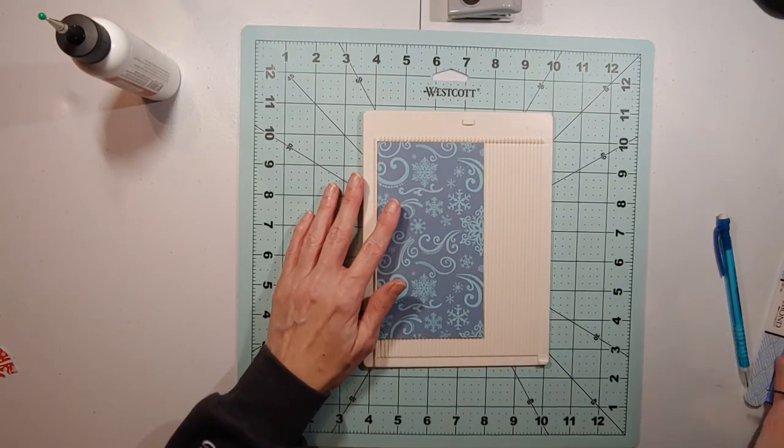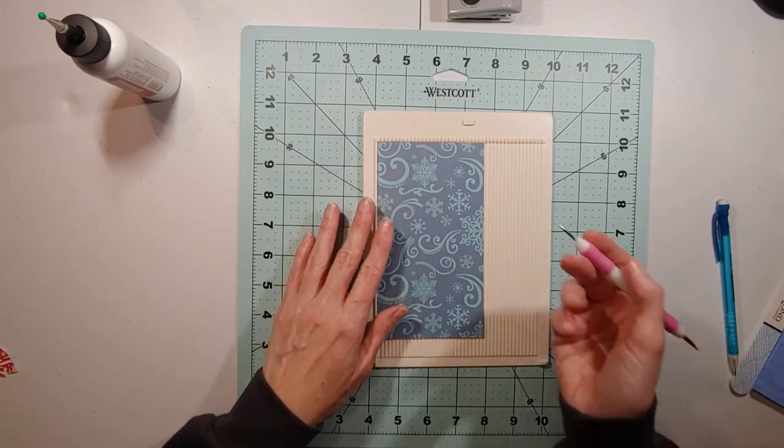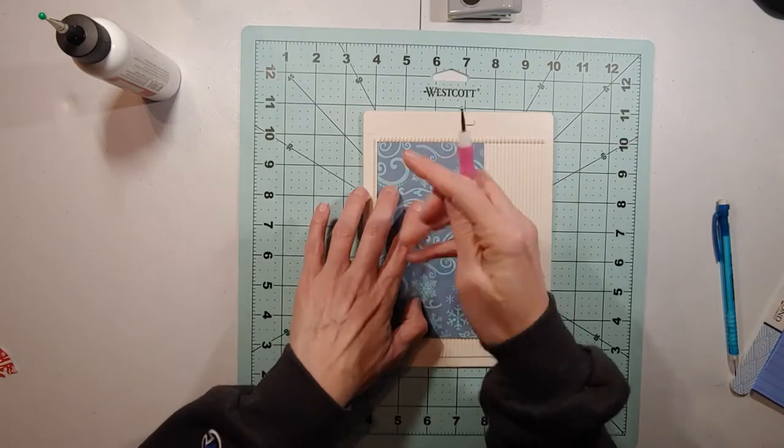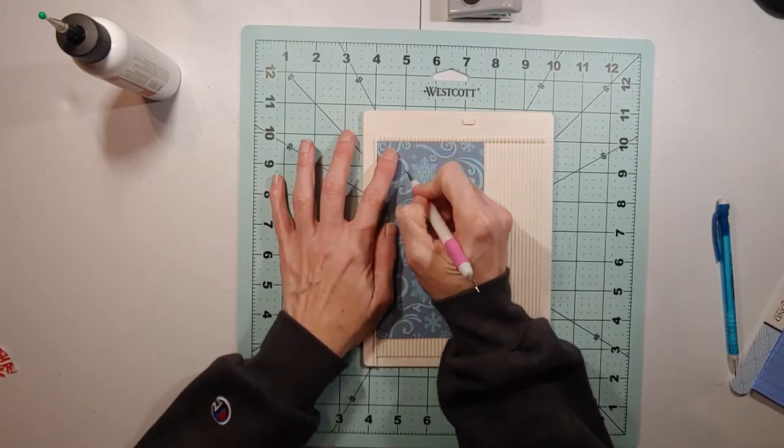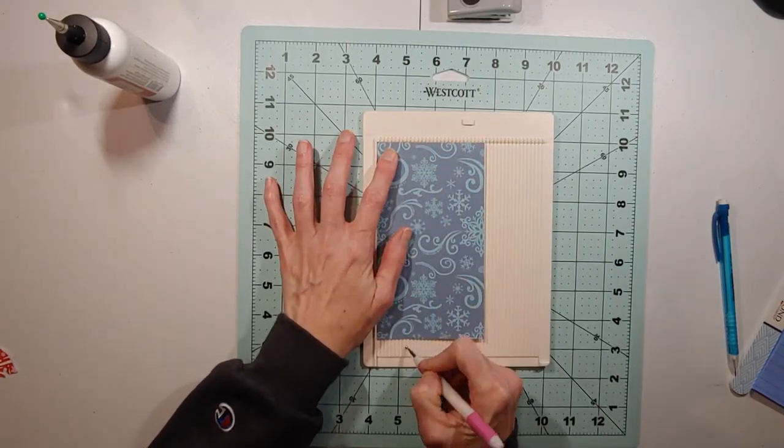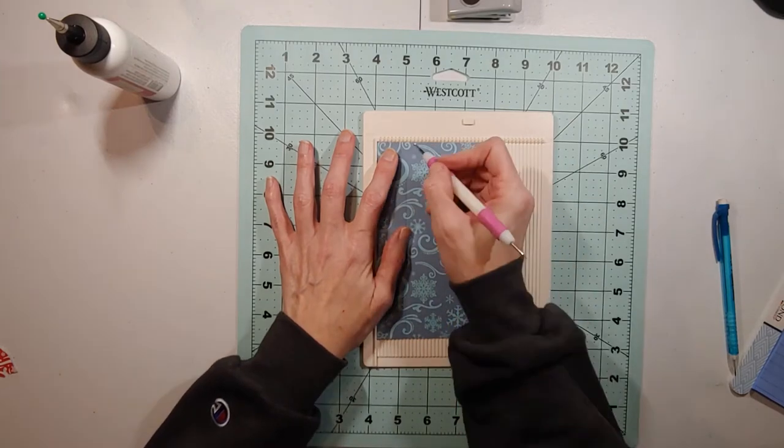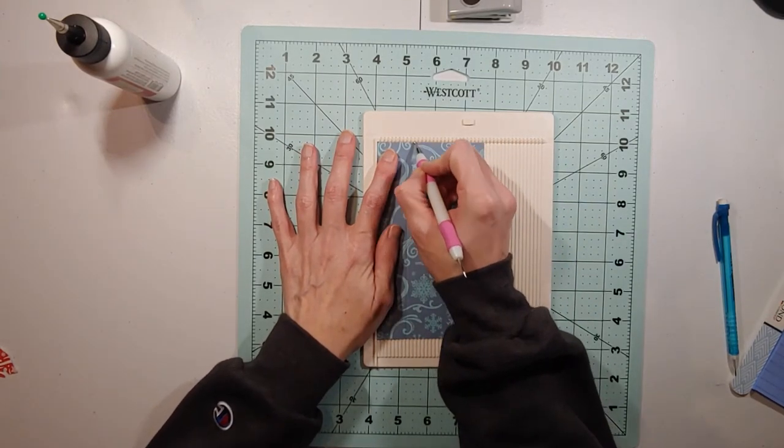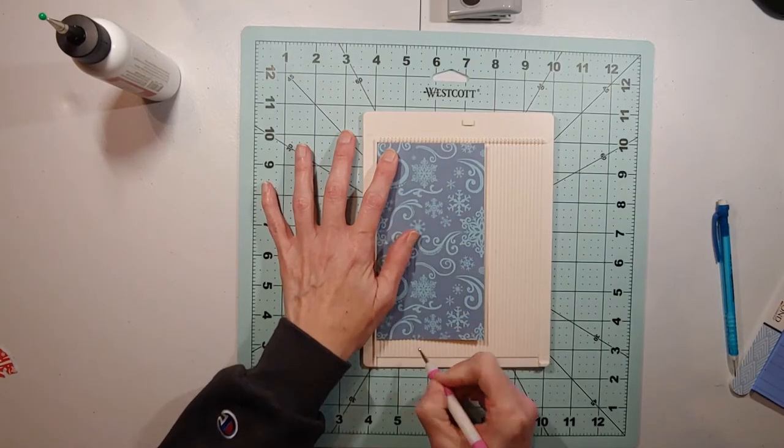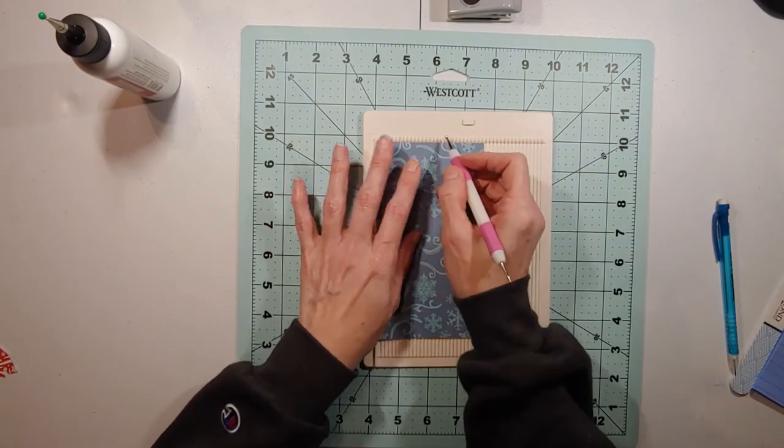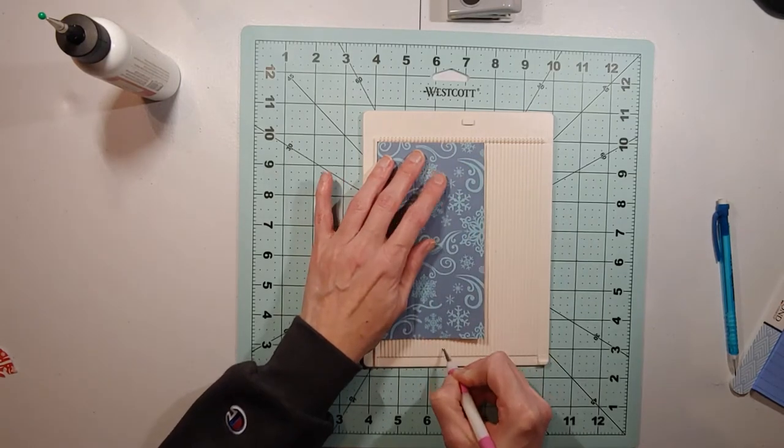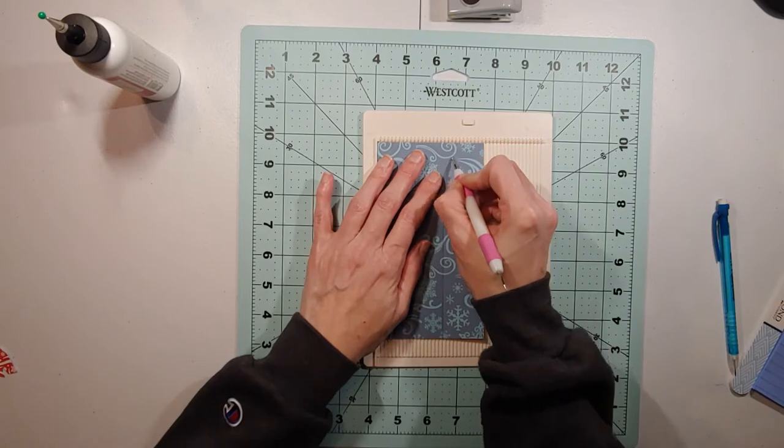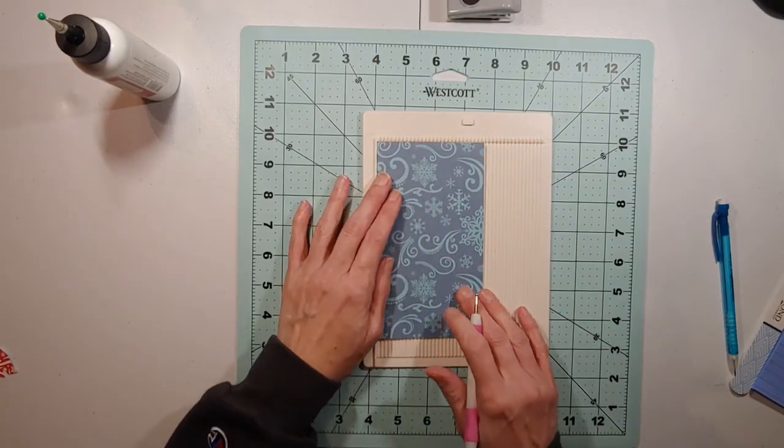We're going to make four score lines. We're going to score at one inch, one and a fourth, and then we're going to make another score line at two and one fourths, and then at two and a half.